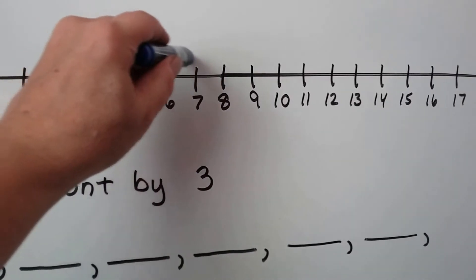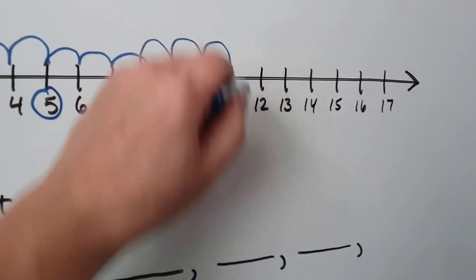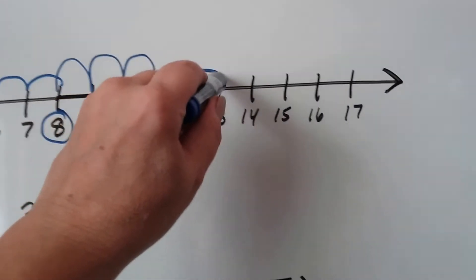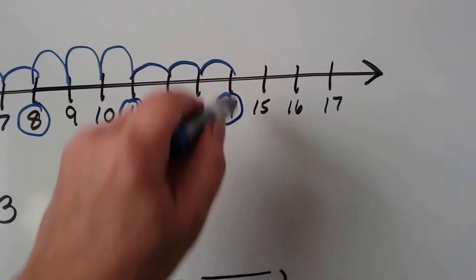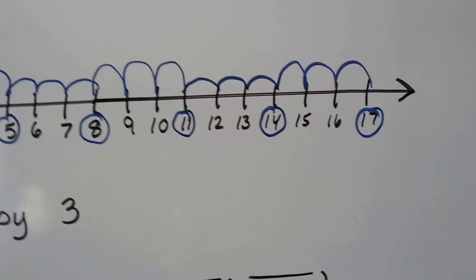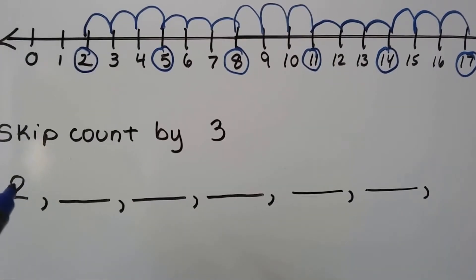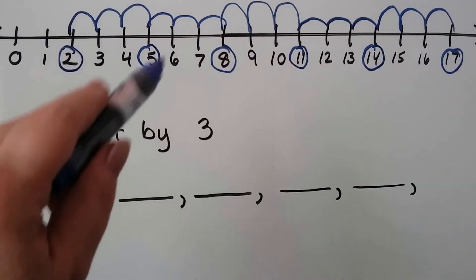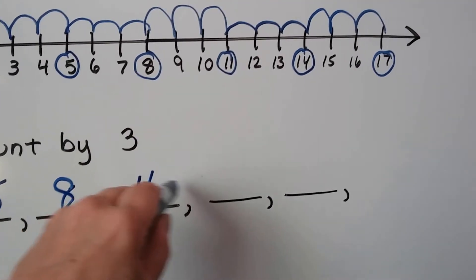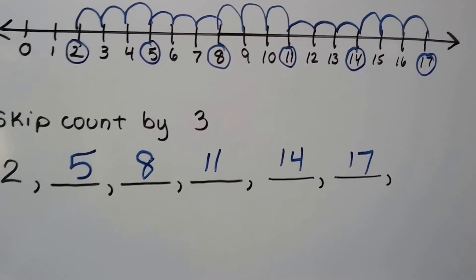We go one, two, three — that brings us to eight. One, two, three — that brings us to eleven. One, two, three — that brings us to fourteen. And that brings us to seventeen. So now we have our numbers to skip count by threes starting with a two: two, five, eight, eleven, fourteen, and seventeen. The number line can help us.